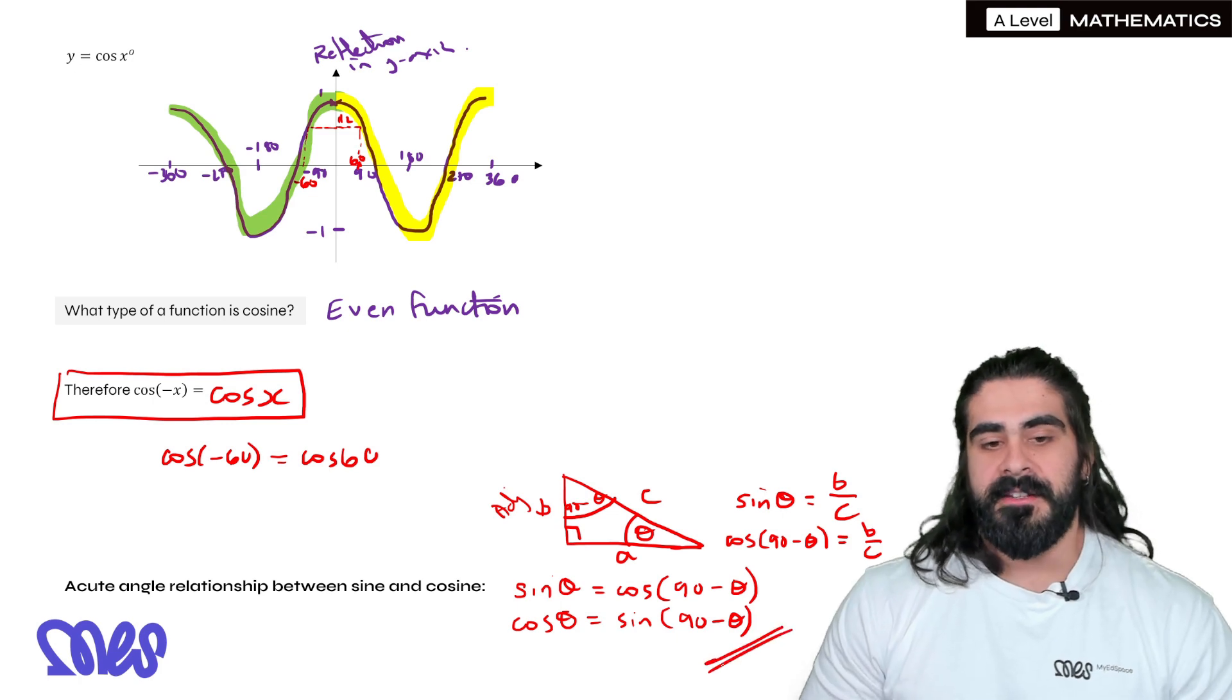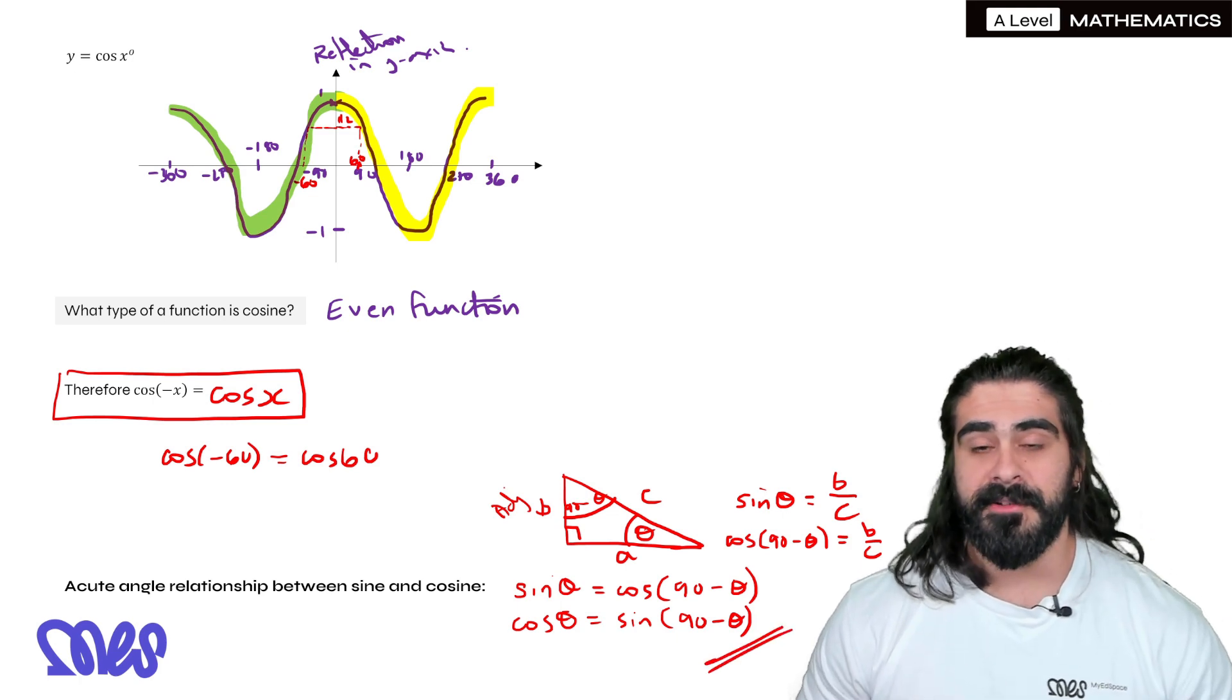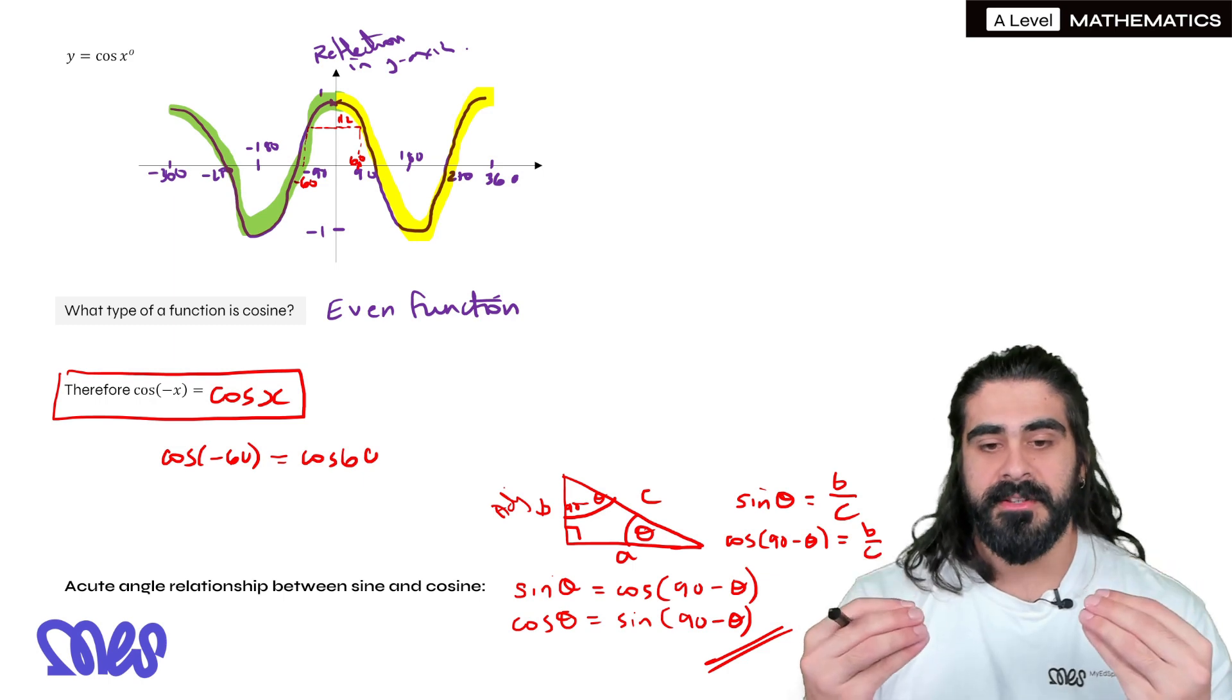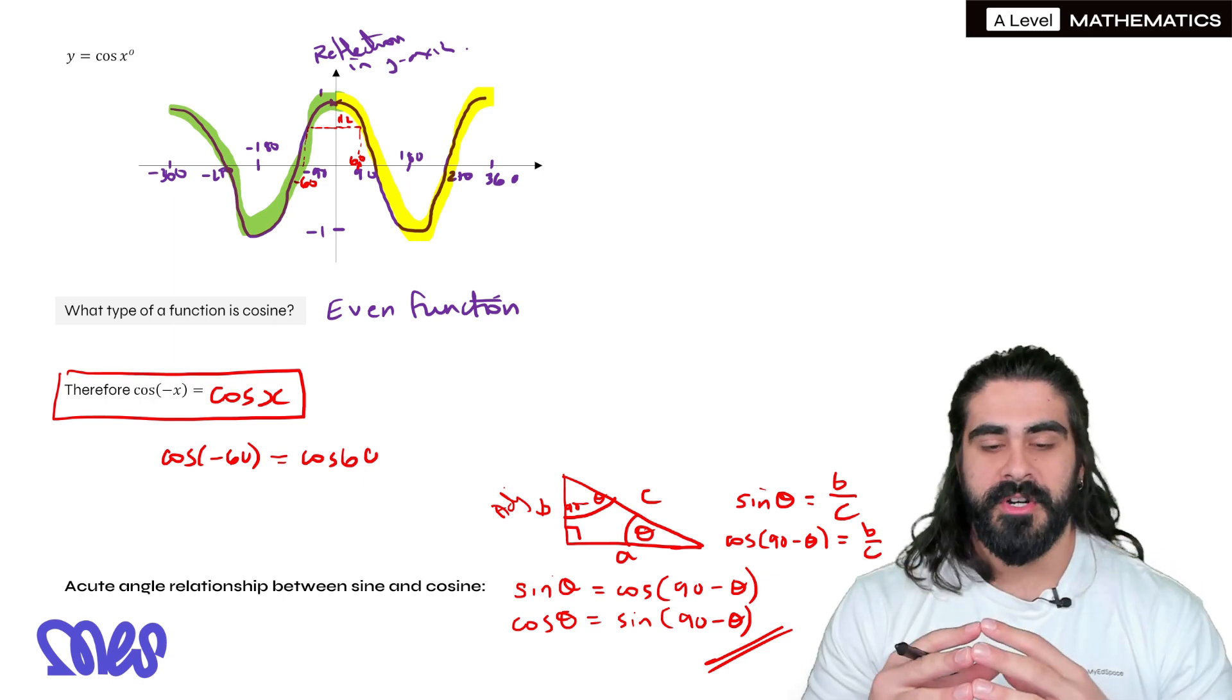Now, exam boards are very sneaky. They slip these in in random places, so it's really important that you just remember these. They're acute angle transformations.